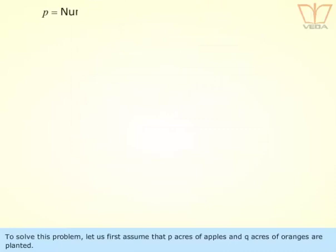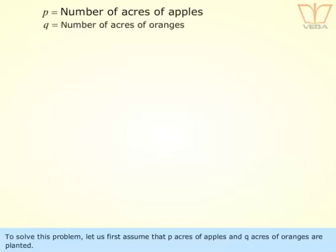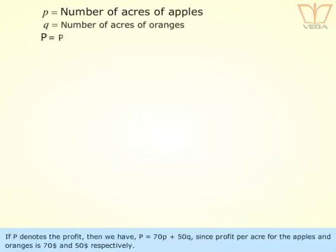To solve this problem, let us first assume that p acres of apples and q acres of oranges are planted. If capital P denotes profit, then we have P equals 70p plus 50q, since profit per acre for the apples and oranges is $70 and $50 respectively.